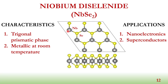This transition metal dichalcogenide is a two-dimensional material with remarkable properties. It has a trigonal prismatic phase, is naturally metallic at room temperature, and has direct applications on nanoelectronics and superconductors.